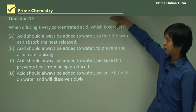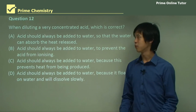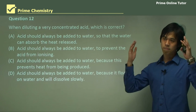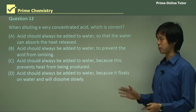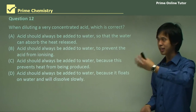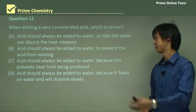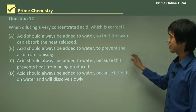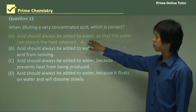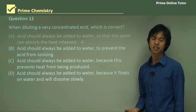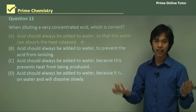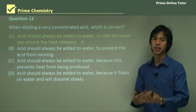The next major point: when diluting a very concentrated acid, which approach is correct? Always add the acid to the water — small amounts of acid to very large volumes of water. Acid should always be added to the water so that the large volume of water can absorb the heat released.